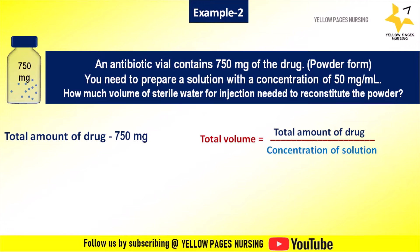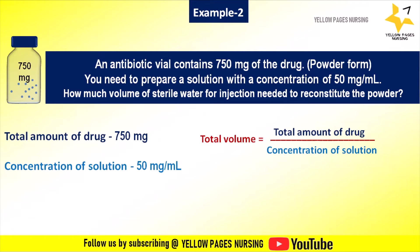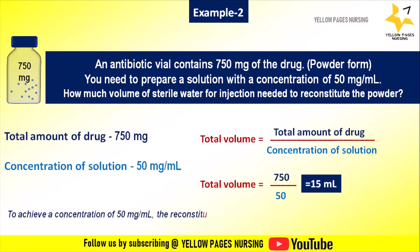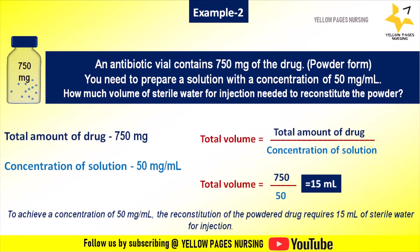Here, the total amount of drug is 750 milligram and the concentration of the solution is 50 milligram per ml. As per the formula, total volume equals 750 divided by 50, which gives the answer 15 ml. So to achieve a concentration of 50 milligram per ml, the reconstitution of the powdered drug requires 15 ml of sterile water for injection.